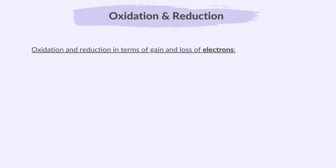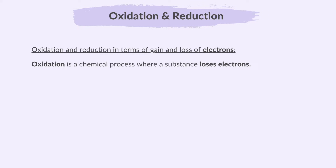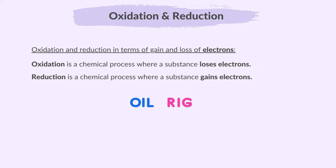Now, let's look at oxidation and reduction in terms of loss and gain of electrons. In a broader context, oxidation refers to the loss of electrons and reduction refers to the gain of electrons. OIL RIG is a helpful mnemonic to remember what happens during oxidation and reduction in terms of electron transfer. Note: we do not use this mnemonic for gain and loss of oxygen — only for electron transfer.